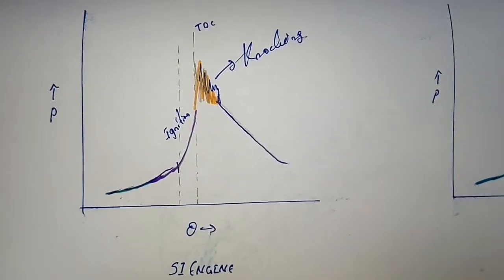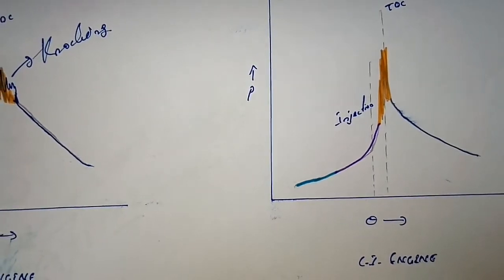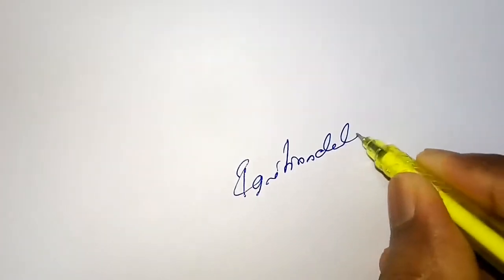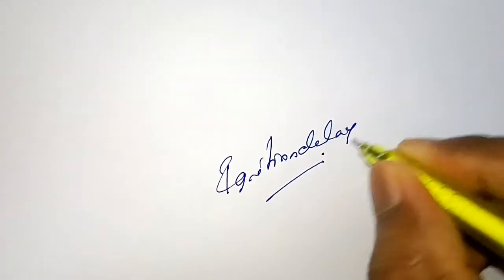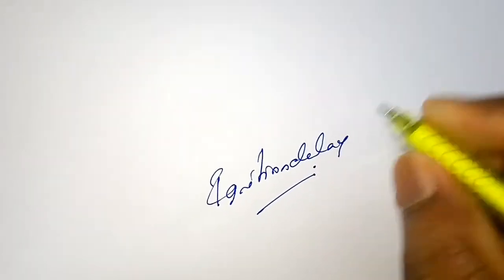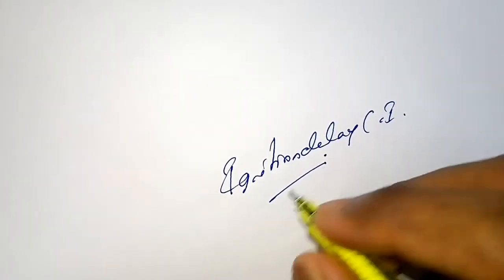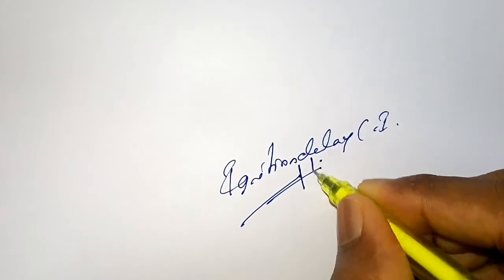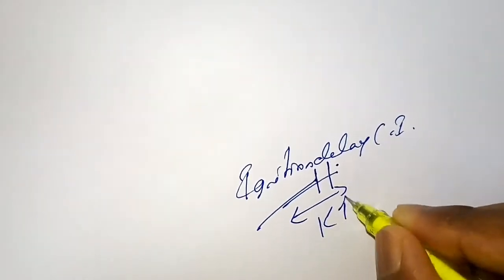Now let's look at how the knocking process happens in a compression ignition, or diesel, engine. In diesel engines, it is a different phenomenon. Knocking in diesel engines is caused by ignition delay. Ignition delay is the time taken to initiate combustion after injection of the fuel. Combustion is initiated by injecting diesel fuel into the combustion chamber, and ignition delay is the time period between the fuel injection and the start of combustion.